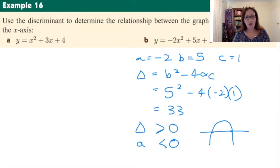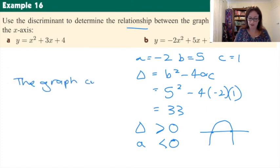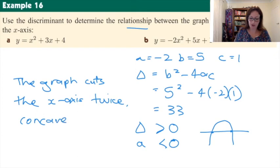But you still must use words to describe this to determine the relationship between the graph and the x-axis. So you would say something along the lines of the graph cuts the x-axis how often? Twice. And which shape is it? It's concave down. So from that description, somebody should be able to draw a very rough sketch of the quadratic in question.